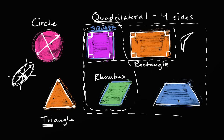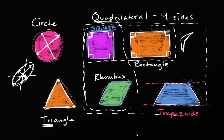This last shape here — this last quadrilateral — what's interesting about it is you have two of its sides going in the same direction, and sometimes this is called parallel. If I draw two lines here, these two lines are never going to cross each other — so these two lines are parallel. If you have one pair of opposite sides that are parallel, we call it a trapezoid. The other opposite sides will eventually cross, so that right over there is called a trapezoid.